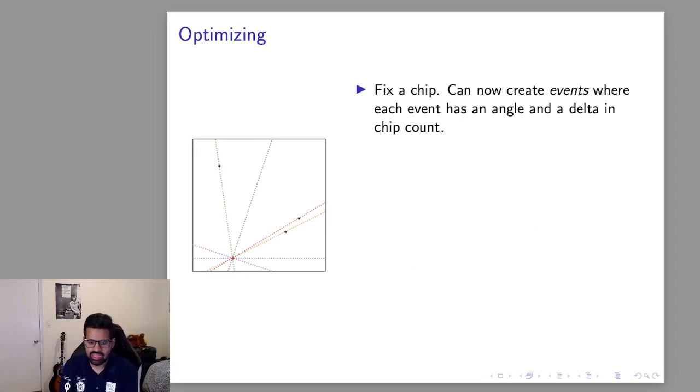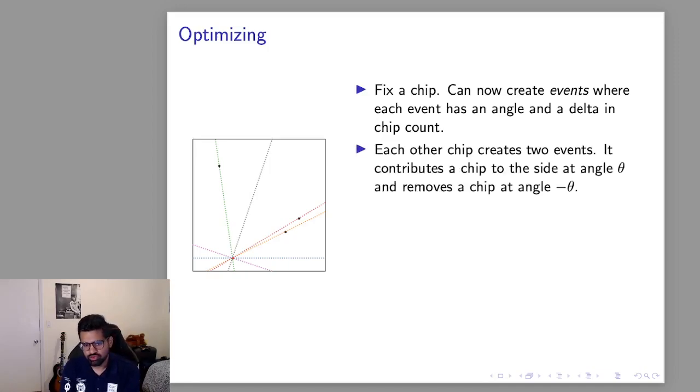So you don't have to recompute which side of the line every chip is on. So we've kind of changed this problem into the form of events. Each event is an angle and a chip delta. So for a specific chip at an angle theta we say when we're at angle theta we add this chip. When we're at angle negative theta we remove this chip.